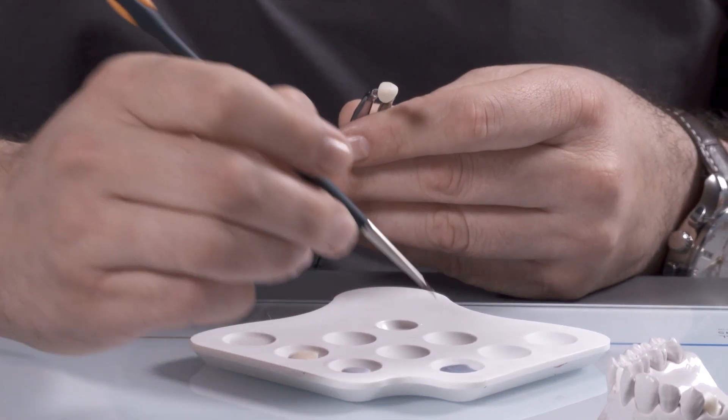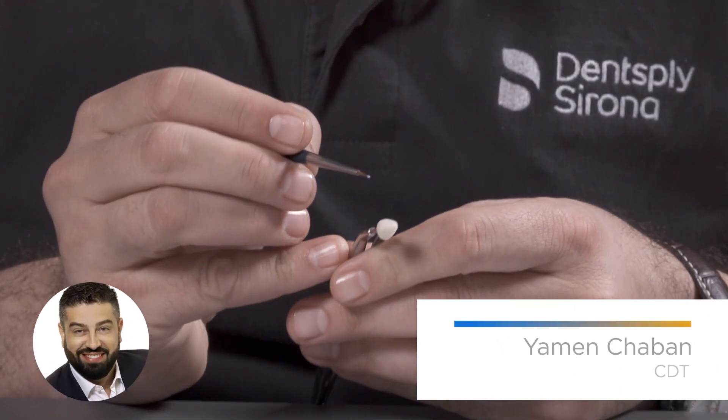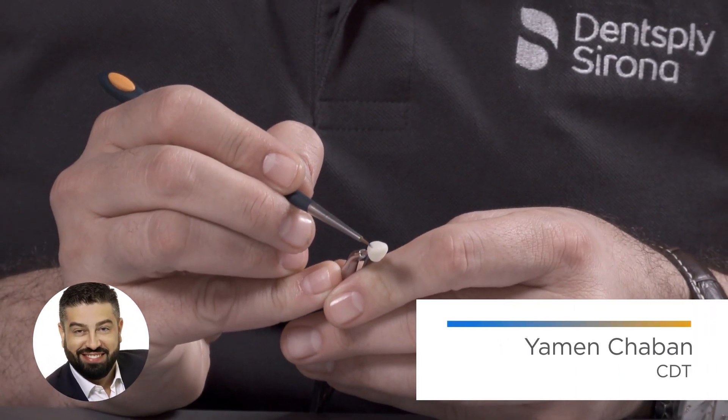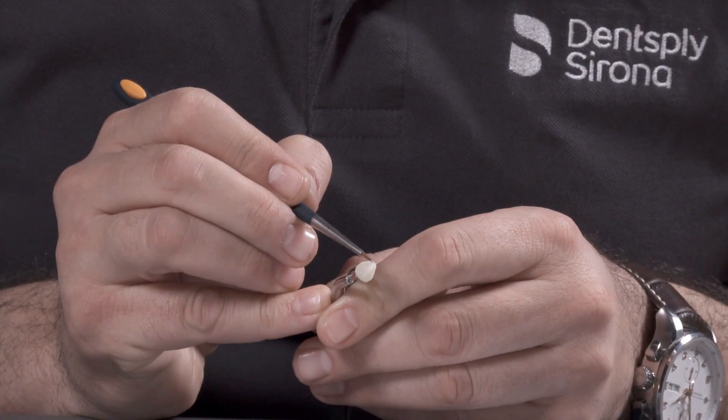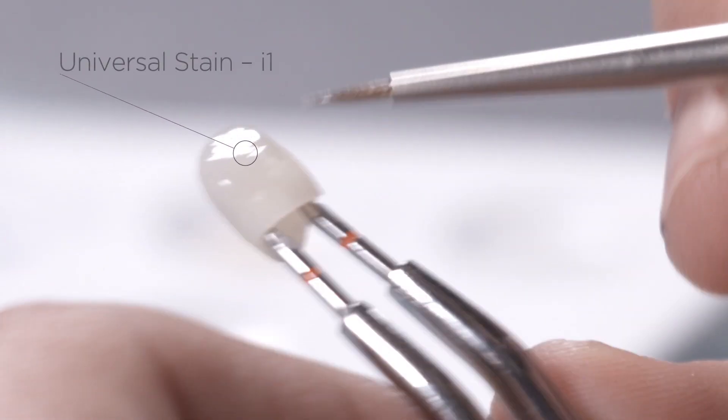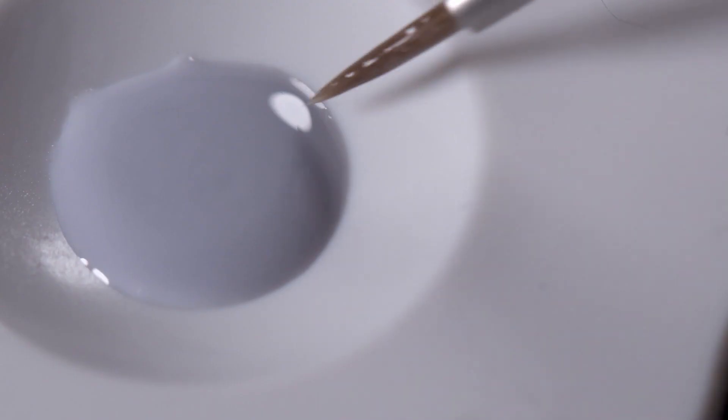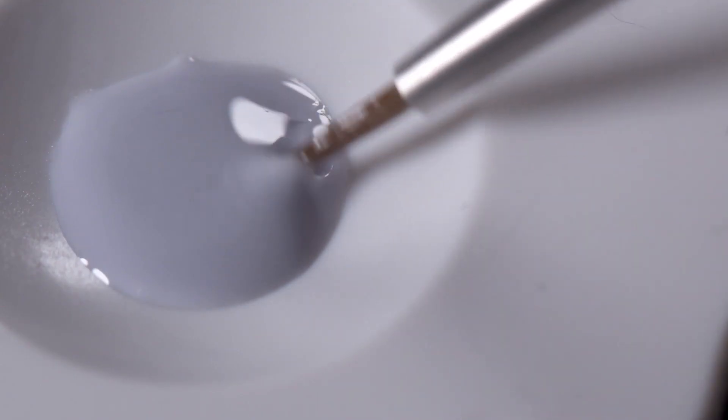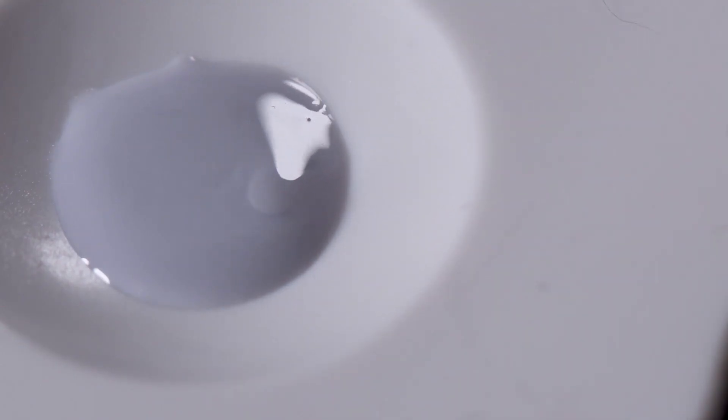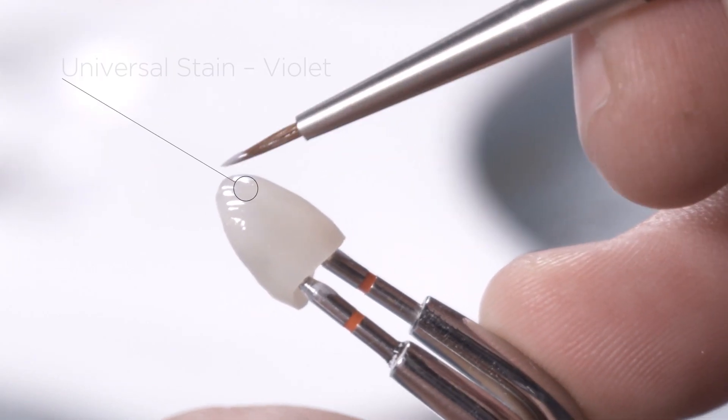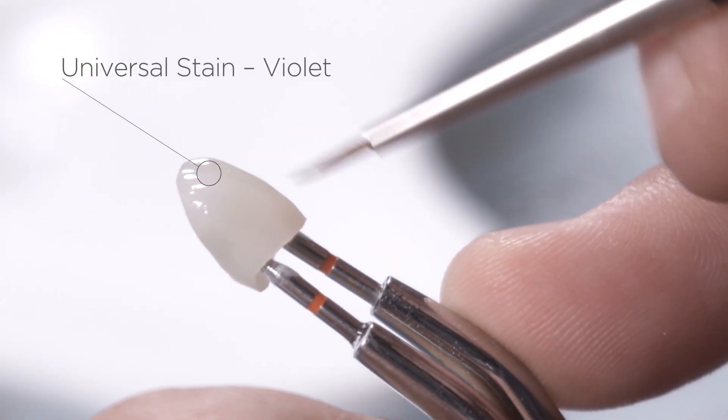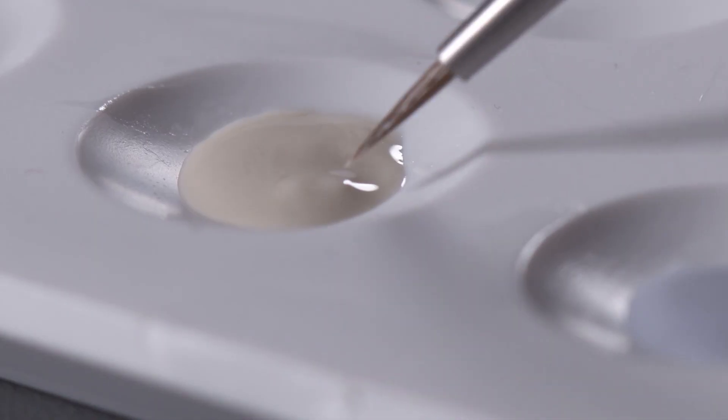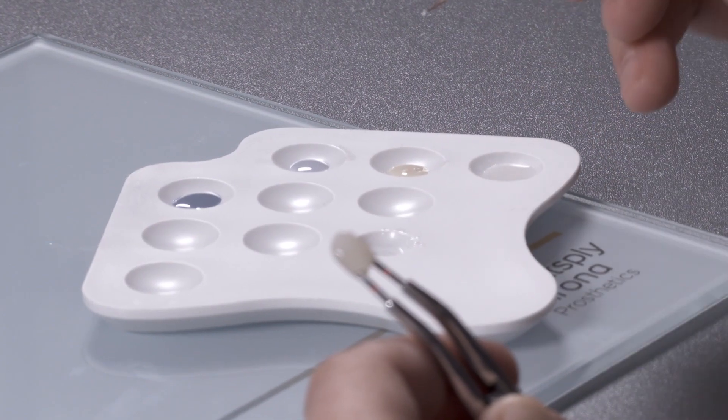Customize the mesial and distal ridge areas with incisal stain I1. Then highlight the areas between the Mamelons with some violet, and characterize the Mamelon structures in the incisal area with cream stain.